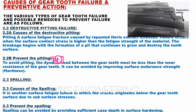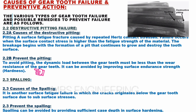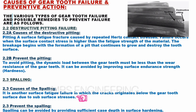To avoid pitting, the dynamic load between the gear teeth must be less than the wear resistance of the gear teeth. It can be avoided by improving surface endurance strength and hardness. Spalling is another surface fatigue failure in which cracks originate below the gear tooth surface due to sub-surface stresses.